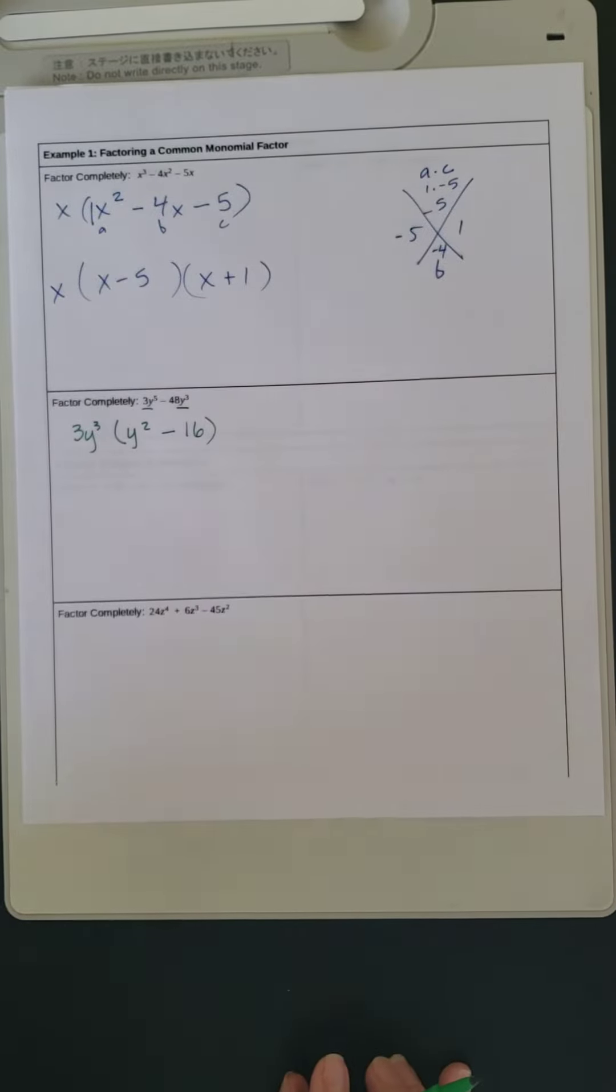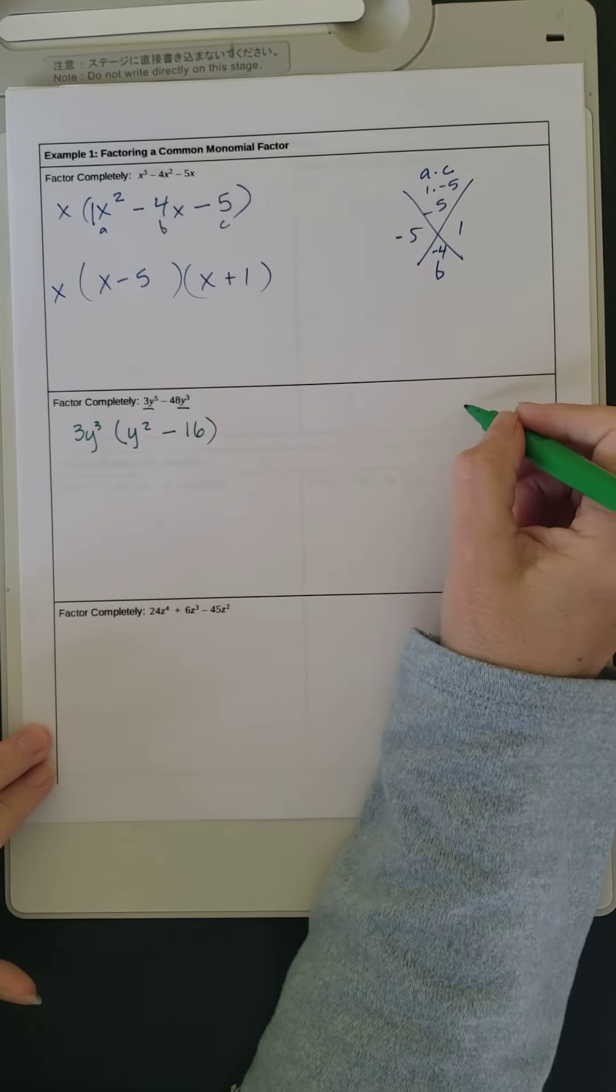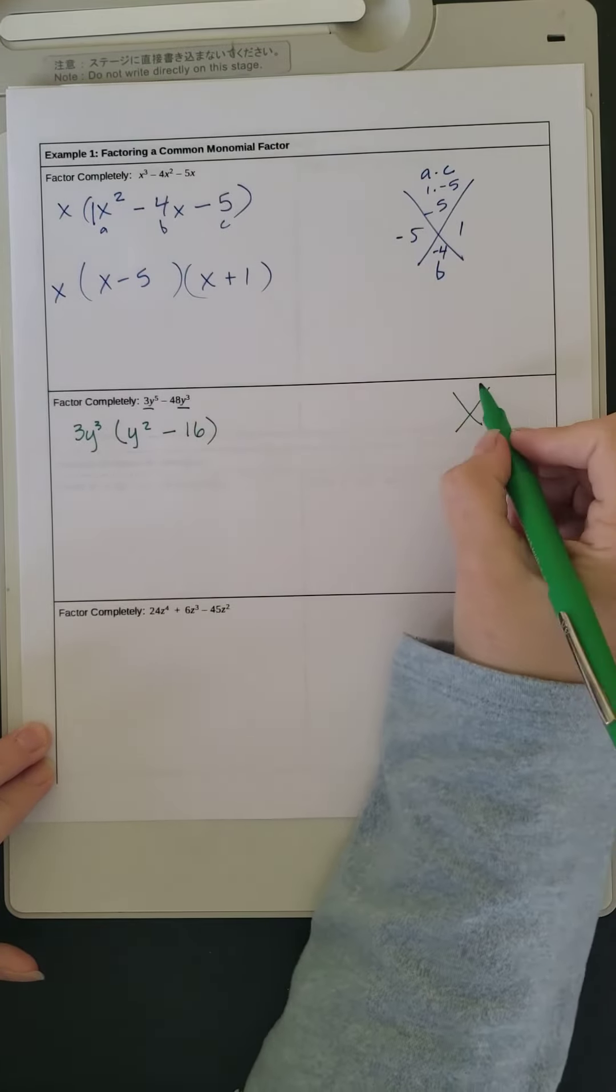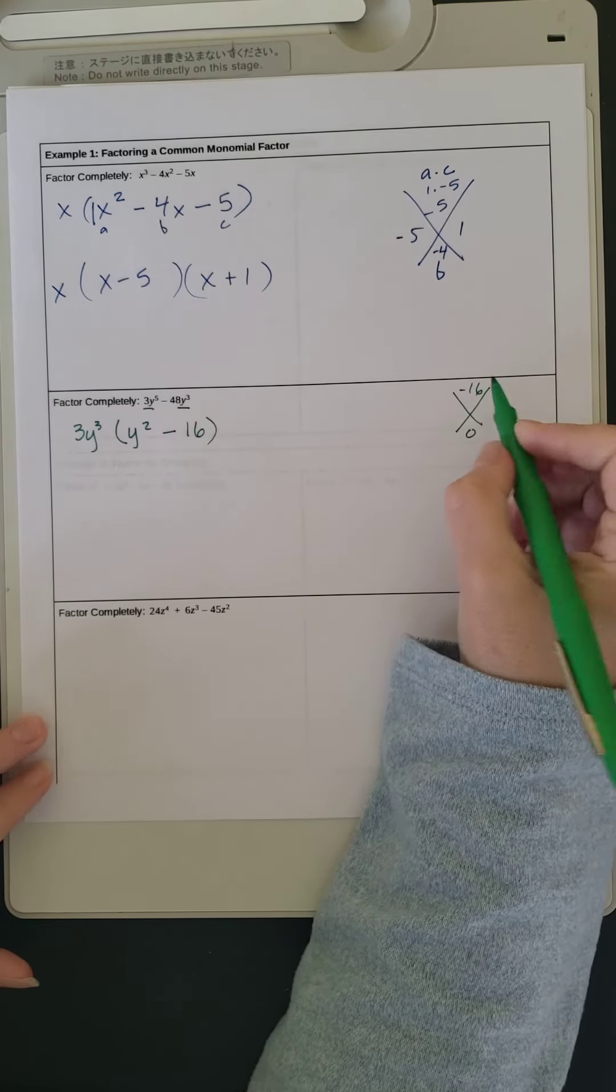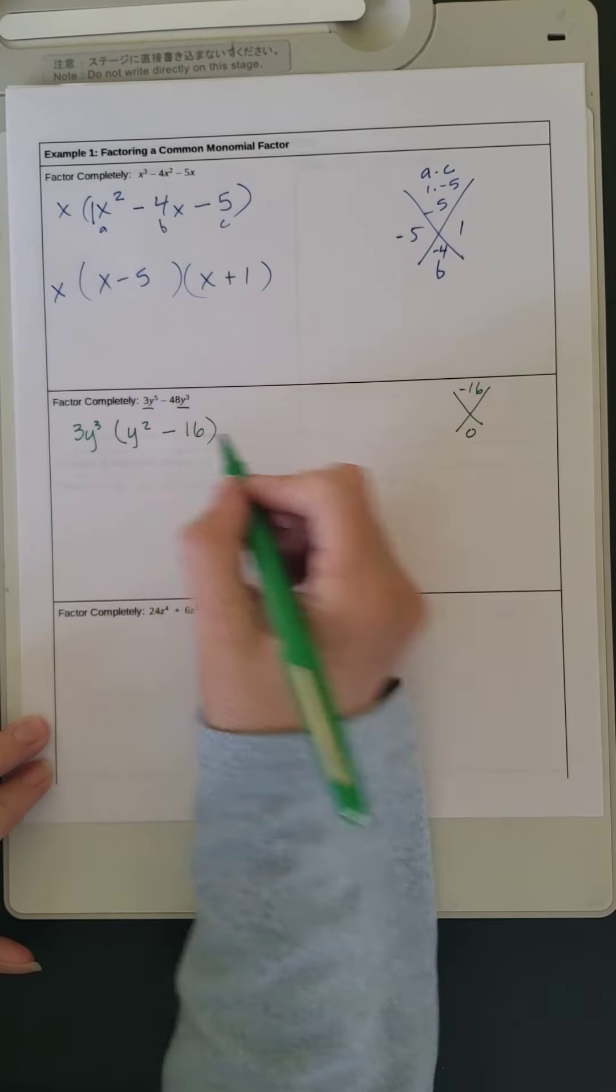I'm sorry, difference of squares. So you can do the x if you want to. We've done this before with a difference of squares. So you want this to equal negative 16 and 0, but also looking at the square of this and the square of this.